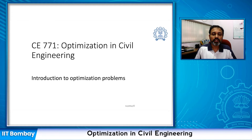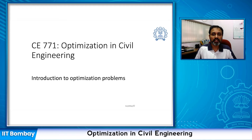In this first lecture, we are going to discuss about the optimization problem and how it can be mathematically represented. We are also going to discuss about the various components of the mathematical representation of an optimization problem and classify the optimization problem according to the nature of the objective function and the constraints. We will briefly discuss the various steps involved in developing the mathematical representation of the optimization problem and the generic techniques to solve an optimization problem. With this, let's start this class and know more about optimization in engineering, particularly civil engineering.